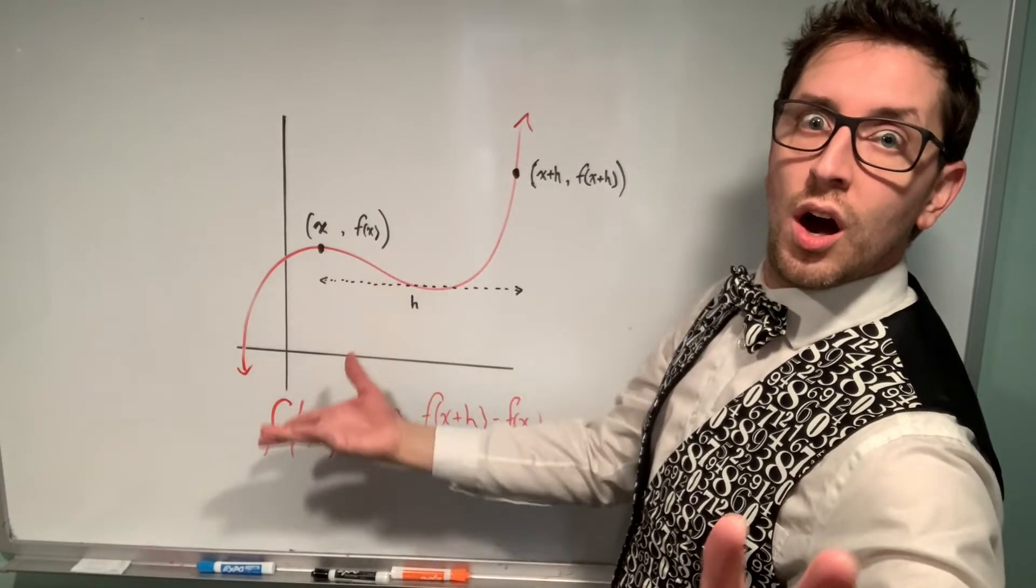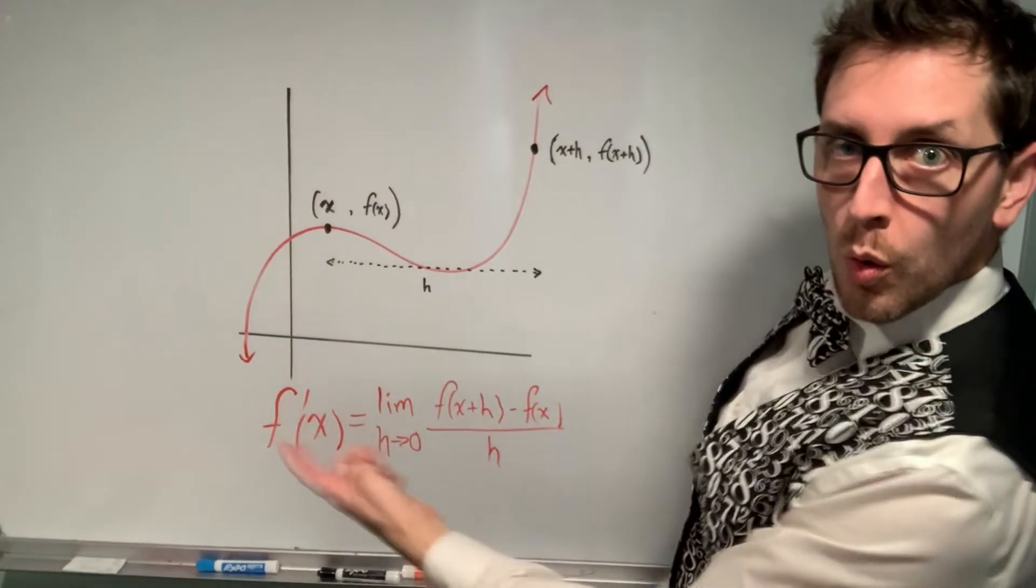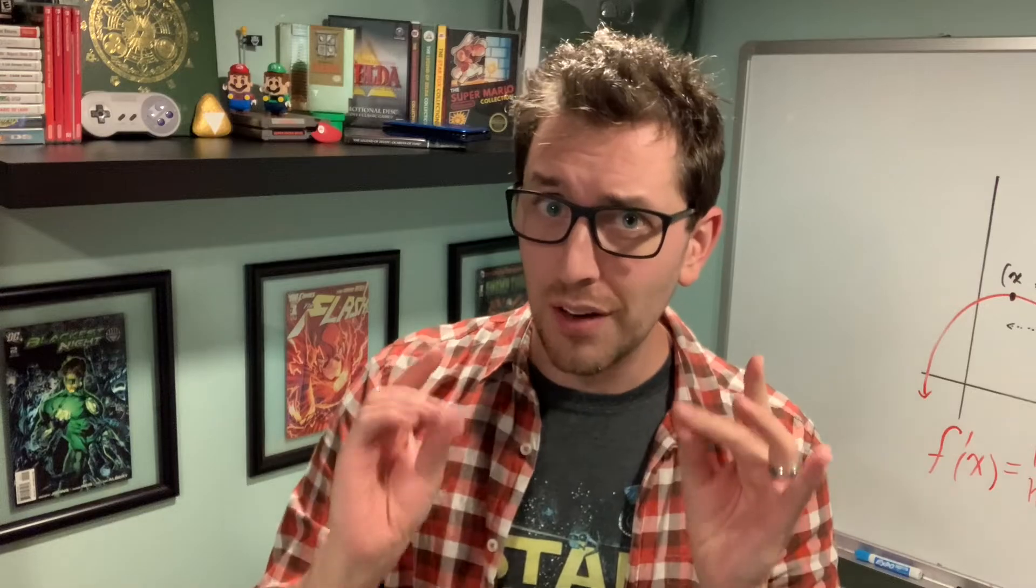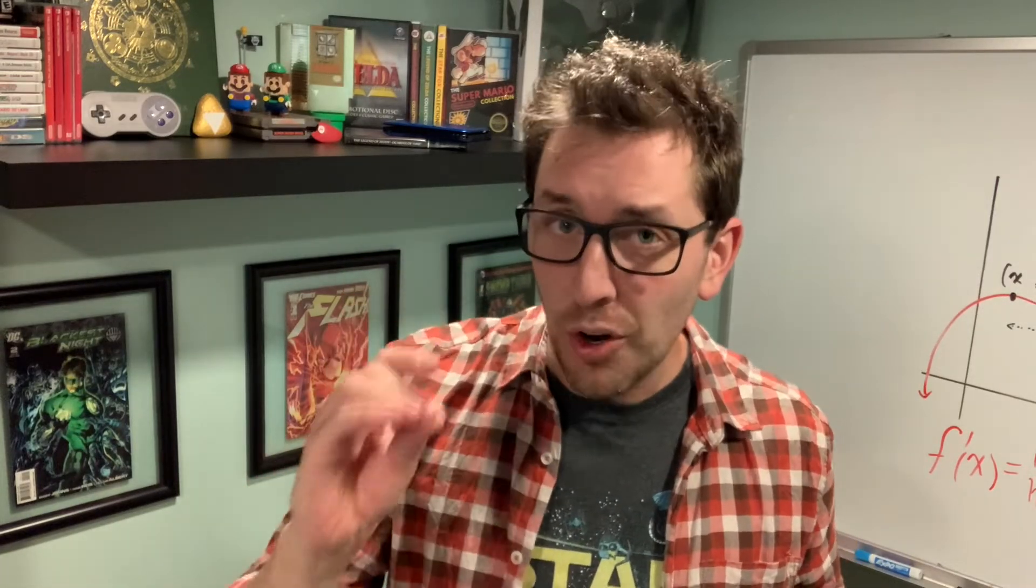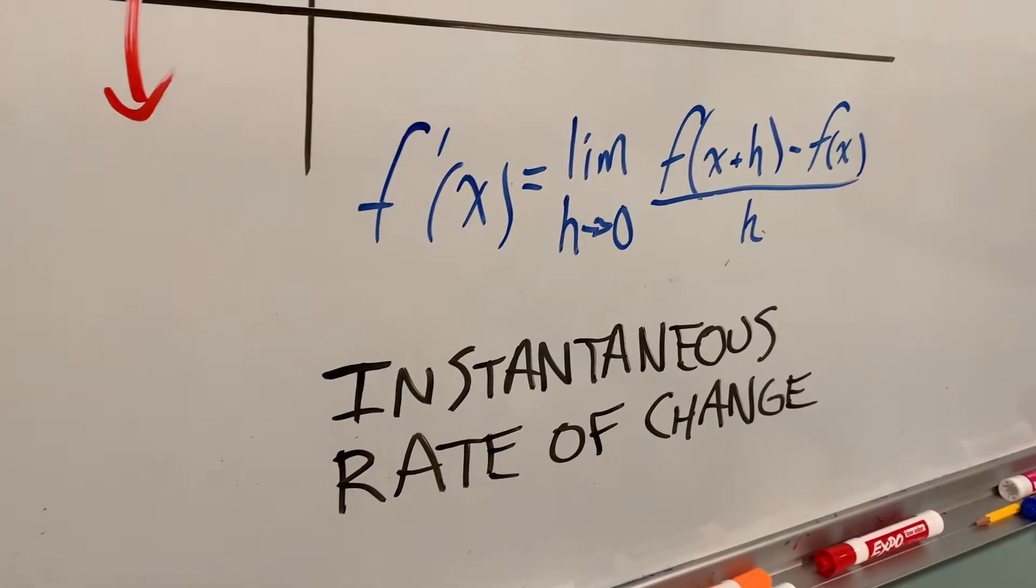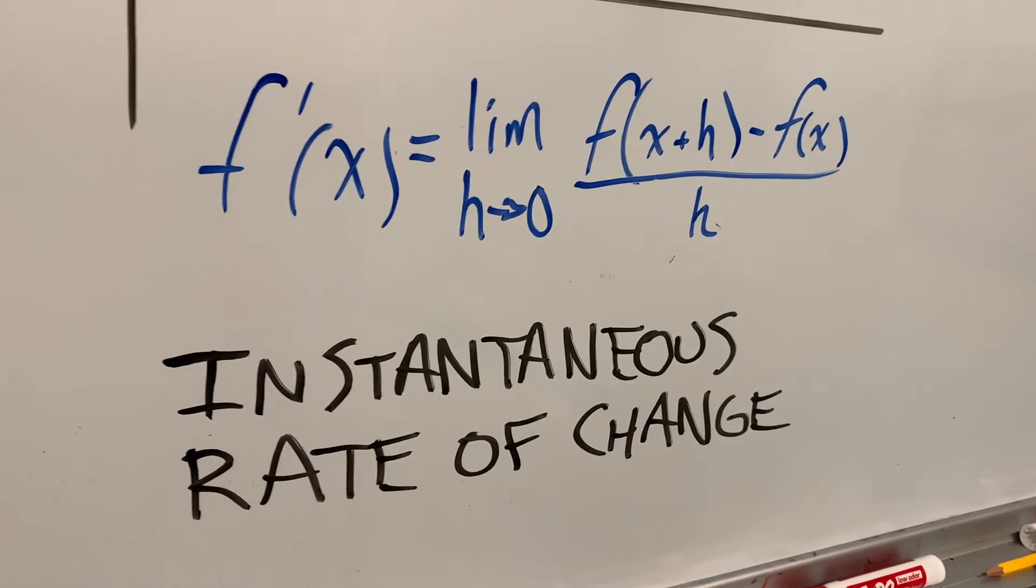So in the end, this horrible looking first principle's definition of the derivative allows us to hack math so that we can find the slope of a line at a single point. Sort of. It's an estimation that we call the instantaneous rate of change. Now applying this thing, that's a totally different monster, because there's all sorts of kinks that you need to know if you want to successfully apply the first principle's definition of the derivative, which is why you are going to want to head over to this video right here, right now. I'll see you there.